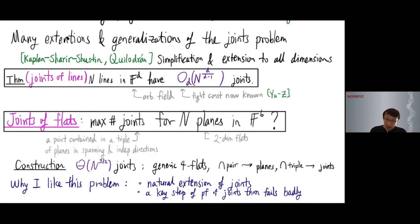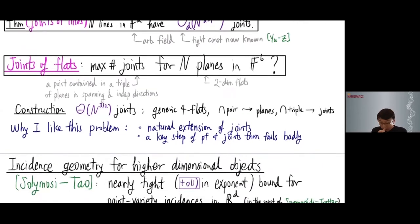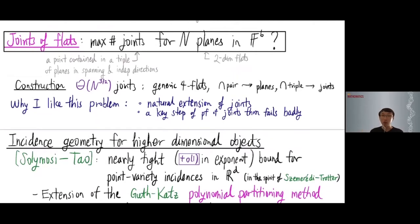I really like this problem for two reasons: it is a natural extension from lines to flats, but also a key step in the proof of the joints theorem fails badly for flats. What we are able to do is overcome this obstacle in the polynomial method, bypassing those difficulties.